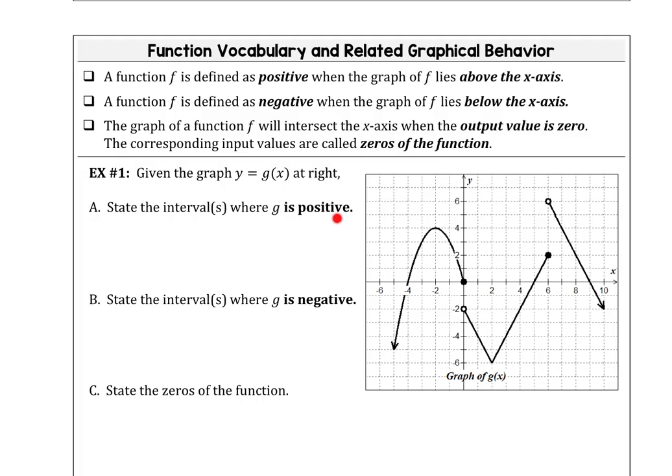We want to look for where the function lies above the x-axis. So it looks like from -4 over to 0 and then again beginning at 5 over to 9. So our function is positive on the interval from -4 to 0 and also from 5 to 9. You can write set notation or interval notation.